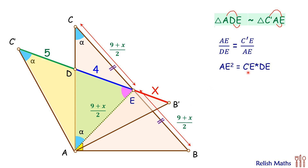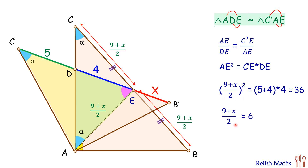Cross multiplying, AE squared equals C'E times DE. AE is (9 plus x) by 2, C'E is 5 plus 4 which is 9, and DE is 4 centimeters. The right-hand side is 9 times 4 which is 36. Taking the square root on both sides, (9 plus x) by 2 equals 6, and solving we get x equals 3 centimeters. That's our answer — I hope you enjoyed the solution, see you in the next video!